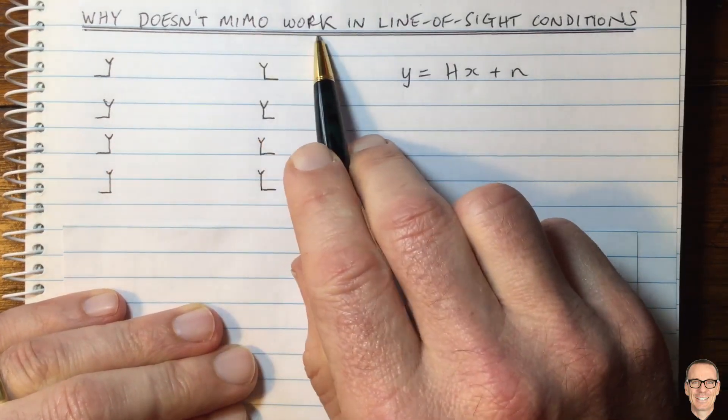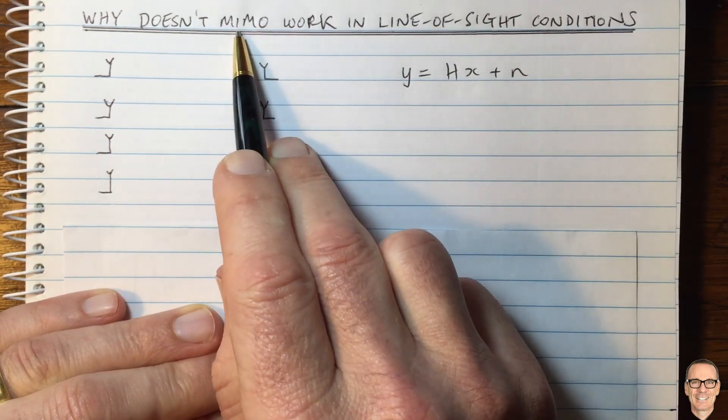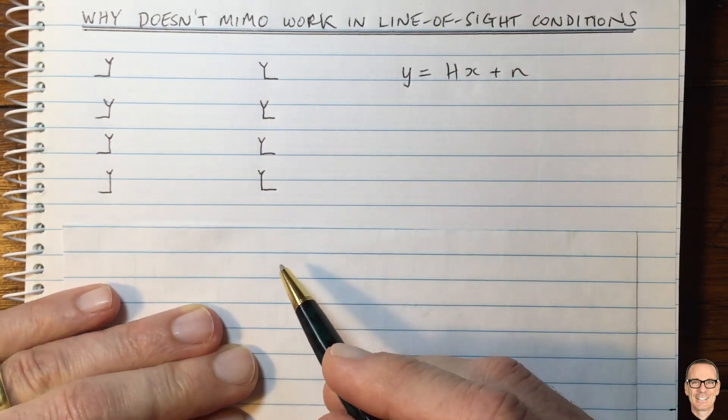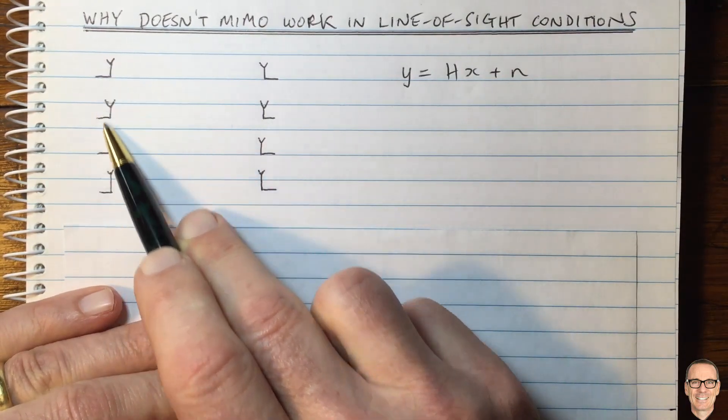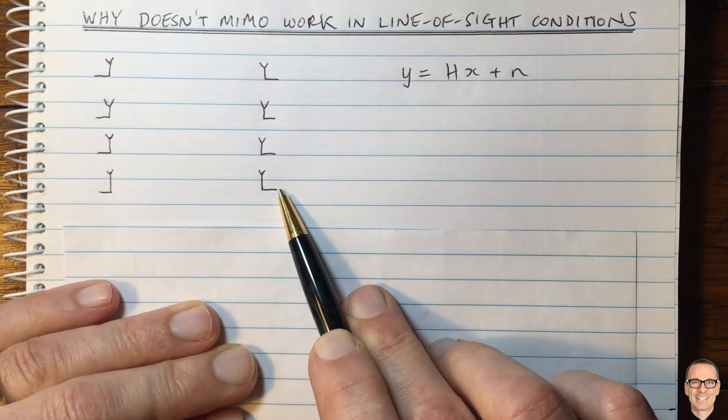Why doesn't MIMO work in line-of-sight conditions? We're talking about multiple input, multiple output digital communications. Here we've got four antennas shown at the transmitter and four antennas at the receiver.